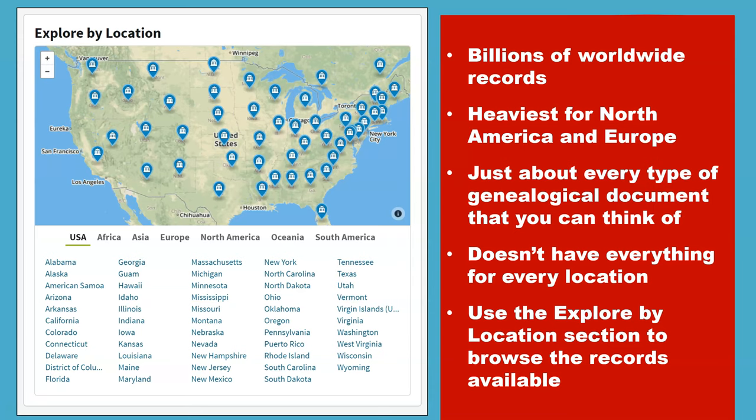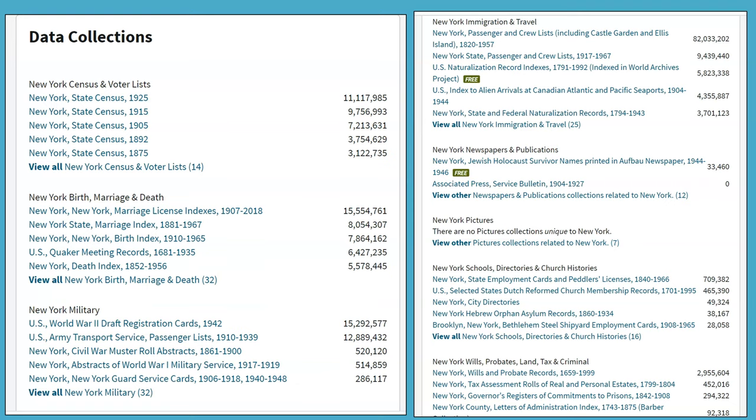Ancestry has billions of records from all over the world, but the heaviest content is for North America and Europe. It has about every type of genealogical document you can think of, but it doesn't include everything for every location. Use the Explore by Location section to browse the records available — here's an example of some of the records and indexes available for New York State.